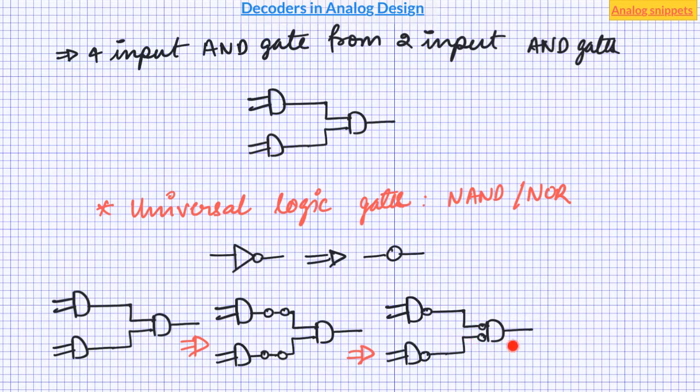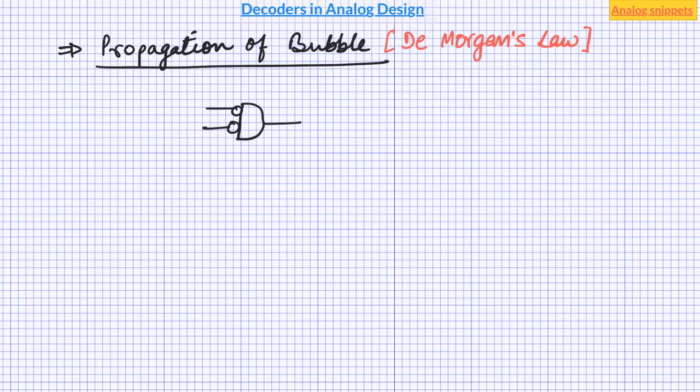To convert 3rd gate into universal gate we need to learn another rule. I will call this rule propagation of bubble. But you may as well call it de Morgan's law. According to propagation of bubble rule if an AND gate contains bubble at all its inputs, then all these bubbles can be propagated to the output by changing AND gate to the OR gate. You can easily verify this rule by writing the truth table of these 2 circuits.